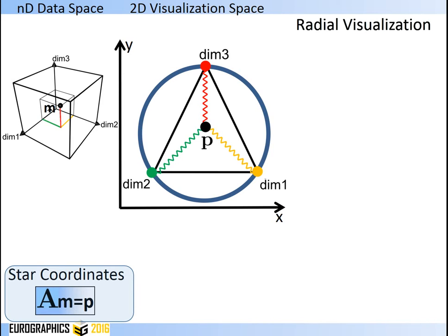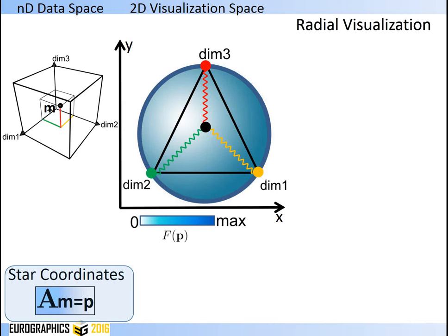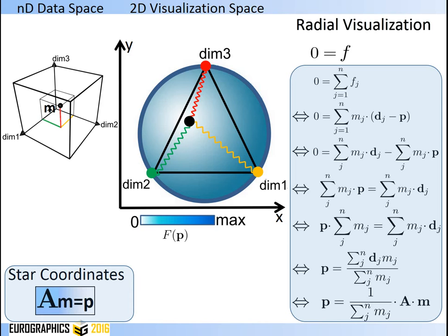In radial visualizations, the data point is considered to be in the sum of anchor points. The projected point v is connected by springs with its anchor points, where each spring is parameterized by the components of its data point m. Following Hooke's law, this introduces a force field. The final position of p is where the total force vanishes. Analytically, the projected point p is also given by applying projection matrix A weighted by the reciprocal sum of its data record components, introducing non-linearities in the projection.